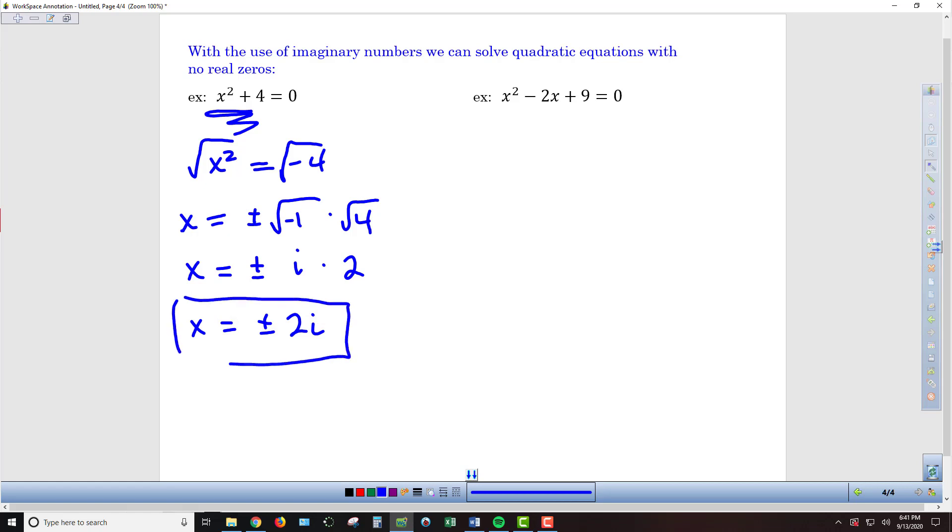We're getting two answers, as we would expect, for a problem that has squared as the highest exponent. But these two answers are imaginary because we had to solve by taking the square root of a negative.